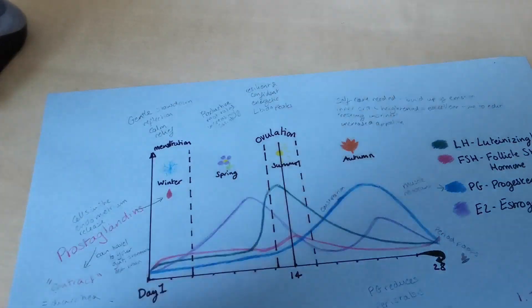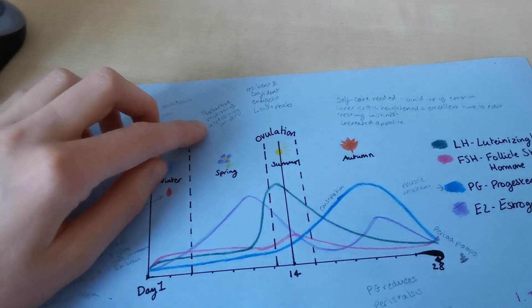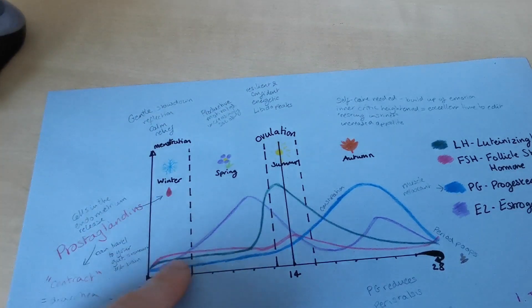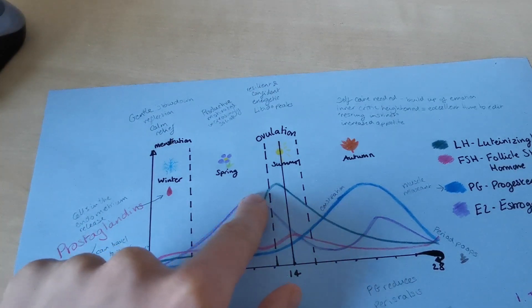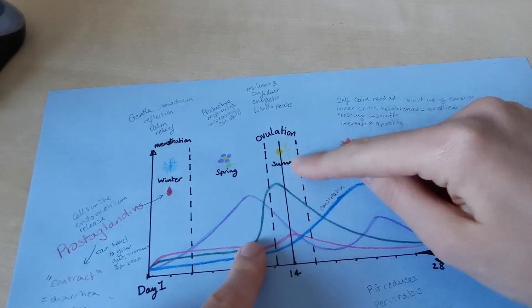So in the spring, which is straight after your period, you're going to be feeling increasingly productive and motivated and social because your oestrogen is rising and you're oestrogen dominant. And that's going to then peak in your summer.